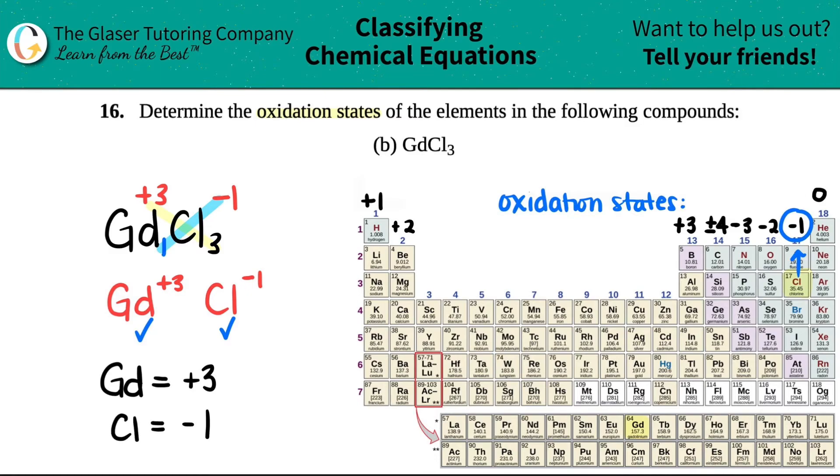In context, just know that whatever this element is, gadolinium was a plus three, that means it lost three electrons. Each Gd lost three electrons. And each chlorine was a minus one, that means it gained one electron. There were three chlorines, each one of them gained one electron.